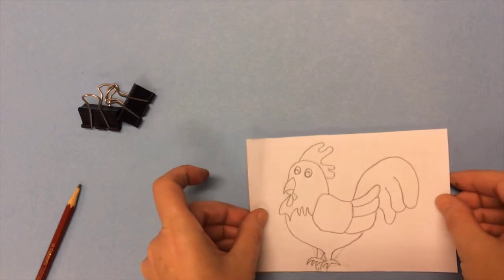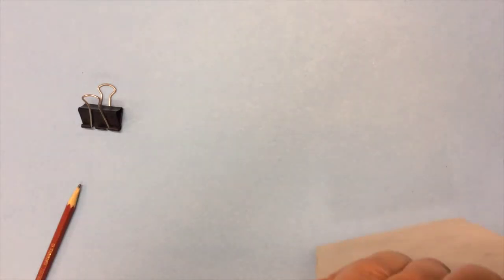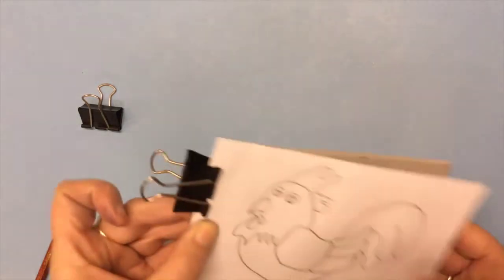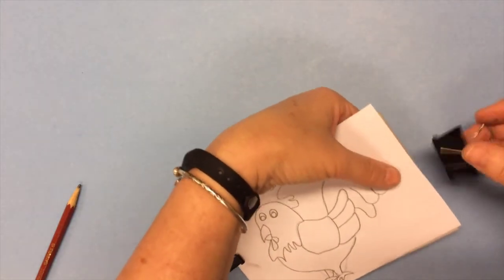Now you're ready to actually transfer the drawing. You've covered the back with the graphite. Now you're going to use the clips to clip it to your lino block. This is going to help hold it in place when you trace it. Make sure the paper is nice and flat when you do this.